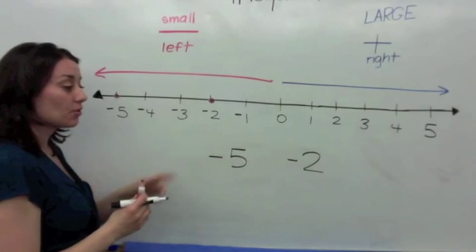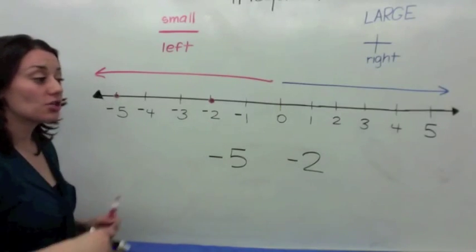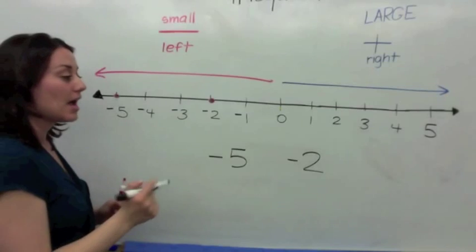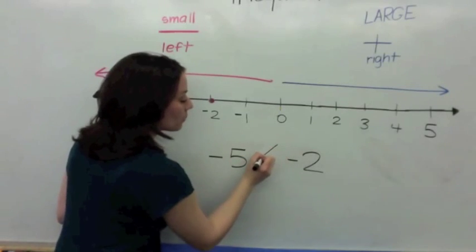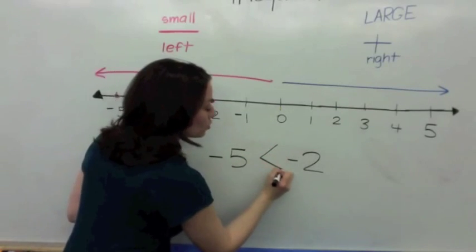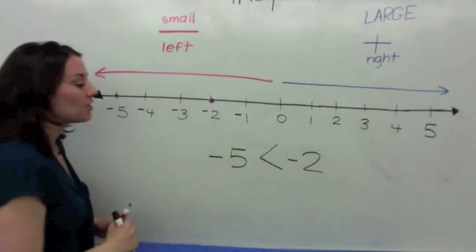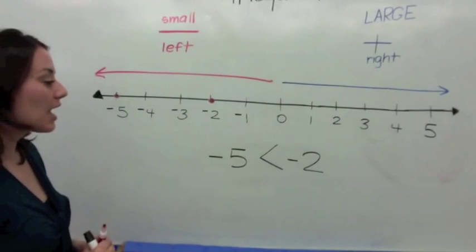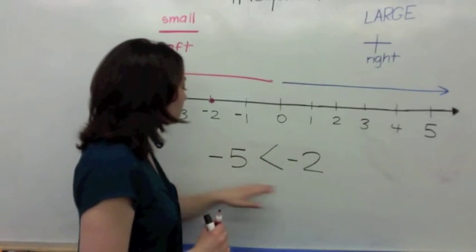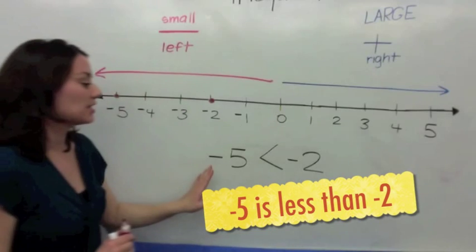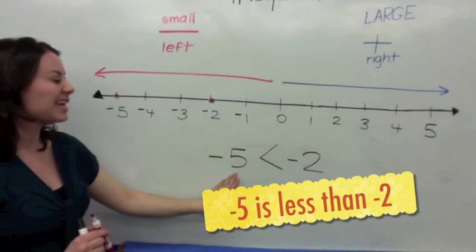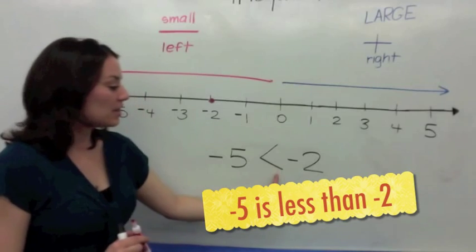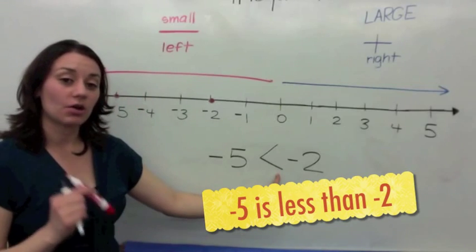Negative 2. That's right. So the hungry Pac-Man opens toward the negative 2. If you read it from left to right, this says that negative 5 is less than negative 2. This is an inequality.